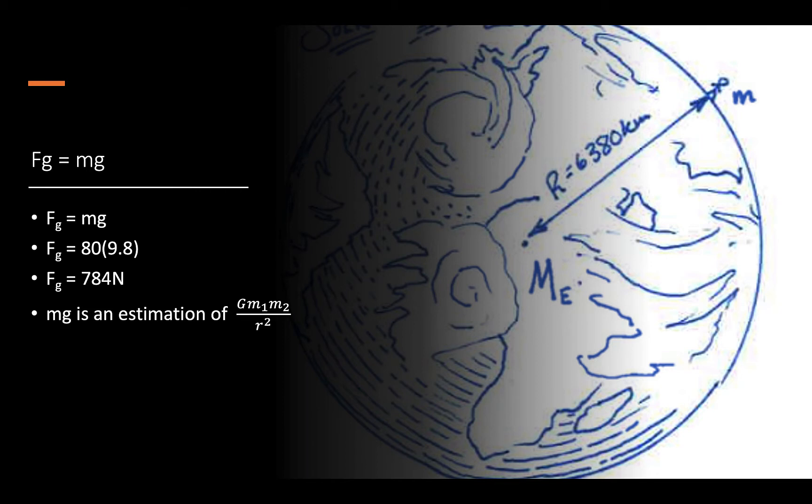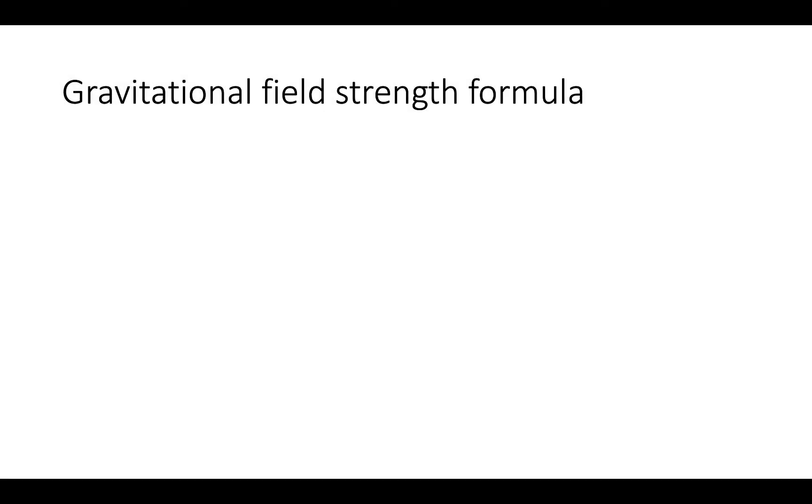mg is an estimation of G m1 m2 over r squared. We can give this process of estimating gravity of an object or planet the gravitational field strength formula. F sub g equals mg. F sub g is also recognized as G m1 m2 over r squared.